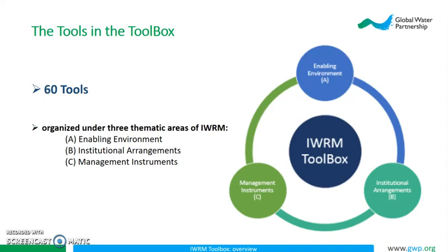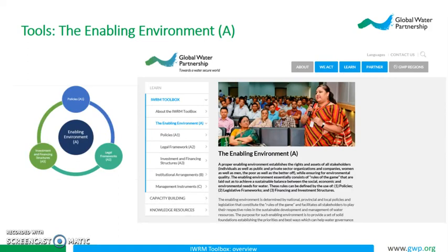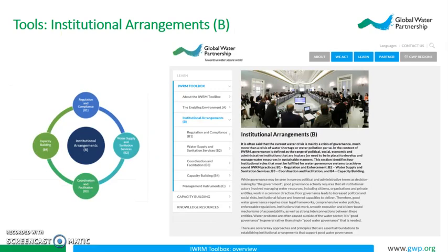The first set of tools are the enabling environment. This toolset establishes a foundation for better water governance. The policy, legal framework, and investment and financing structures of a place set the stage for how water resources may be managed. The next set of tools are under institutional arrangements. These tools identify key institutional roles and functions that need to exist for IWRM and better water governance to be achieved.